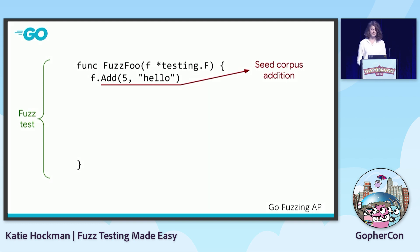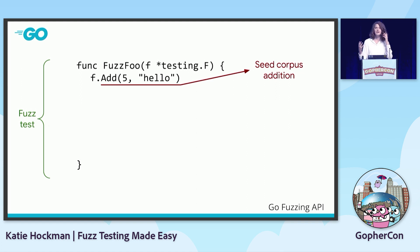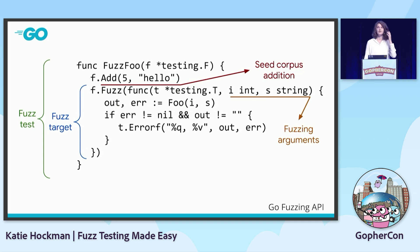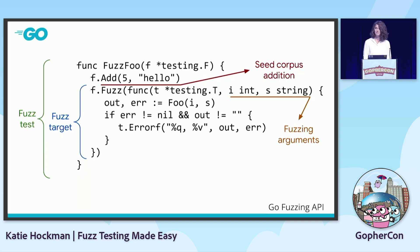In this fuzz foo example, we first provide some starting values by calling f.add. These starting values are going to be kept in something called a seed corpus, which I'll talk about in just a moment. Every f.add call is going to correspond to an entry in your seed corpus, so you can call this function as many times as you want to make as big a seed corpus as you want. You can also do any preparation for your fuzz test here, much like you would do in a table-driven test before the t.run loop. And finally, you define the fuzz target using f.fuzz, which takes a function whose first parameter is a testing.T. The remaining parameters are your fuzzing arguments, which inform what kinds of data the fuzzing engine is going to be generating. This fuzz target is what's going to be called over and over again as fuzzing executes.